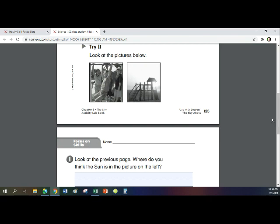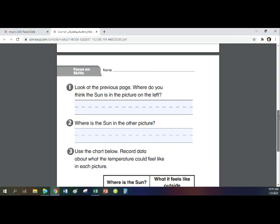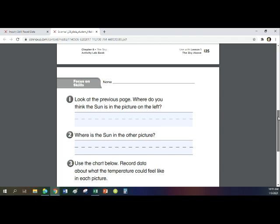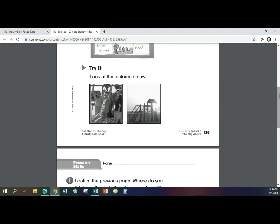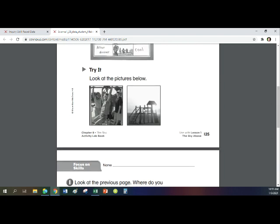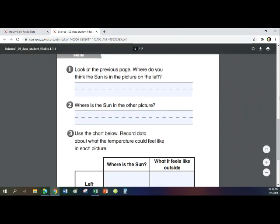Now it says try it. Look at the pictures below. These are the same pictures that we were looking at together as well. Look at the previous page. Previous means before. So here it is. Where do you think the sun is in the picture on the left? Go back. Think about what we talked about. Write a nice complete sentence about where the sun is in that picture. Remember to start your sentence with a capital letter and end it with a period. Number two, where is the sun in the other picture? So now you're looking at the picture on the right. Think about what we talked about. Go ahead and write a complete sentence starting with a capital letter and ending with a period.